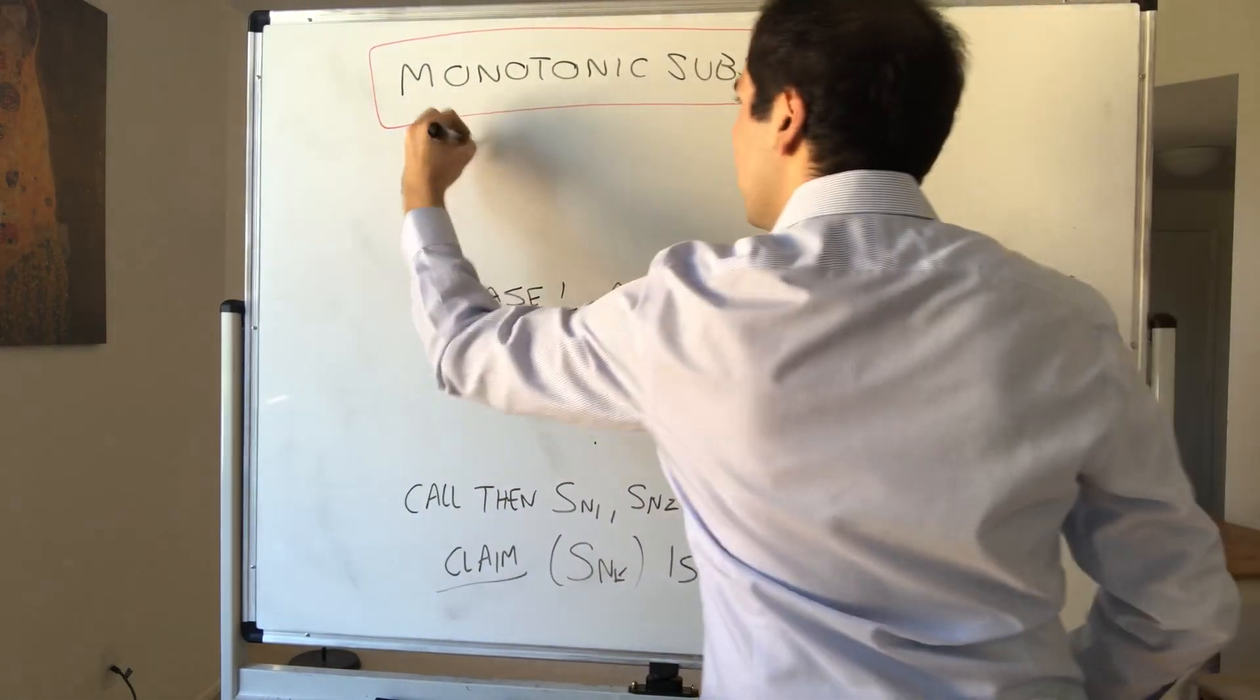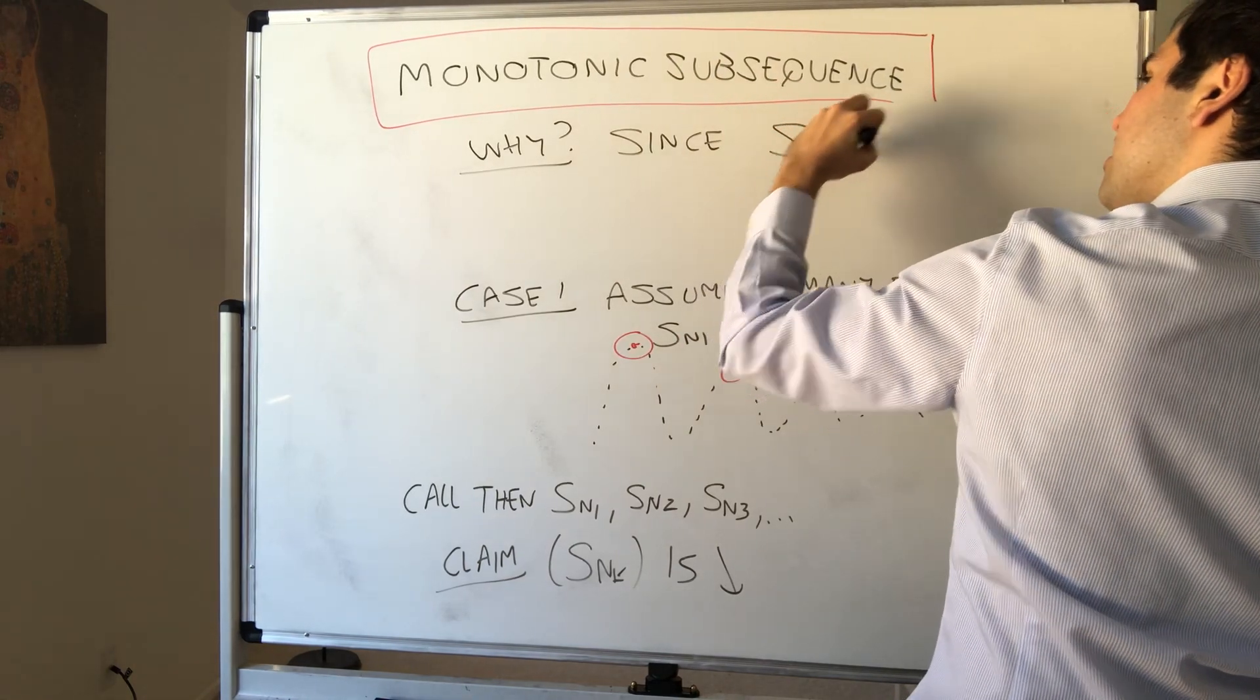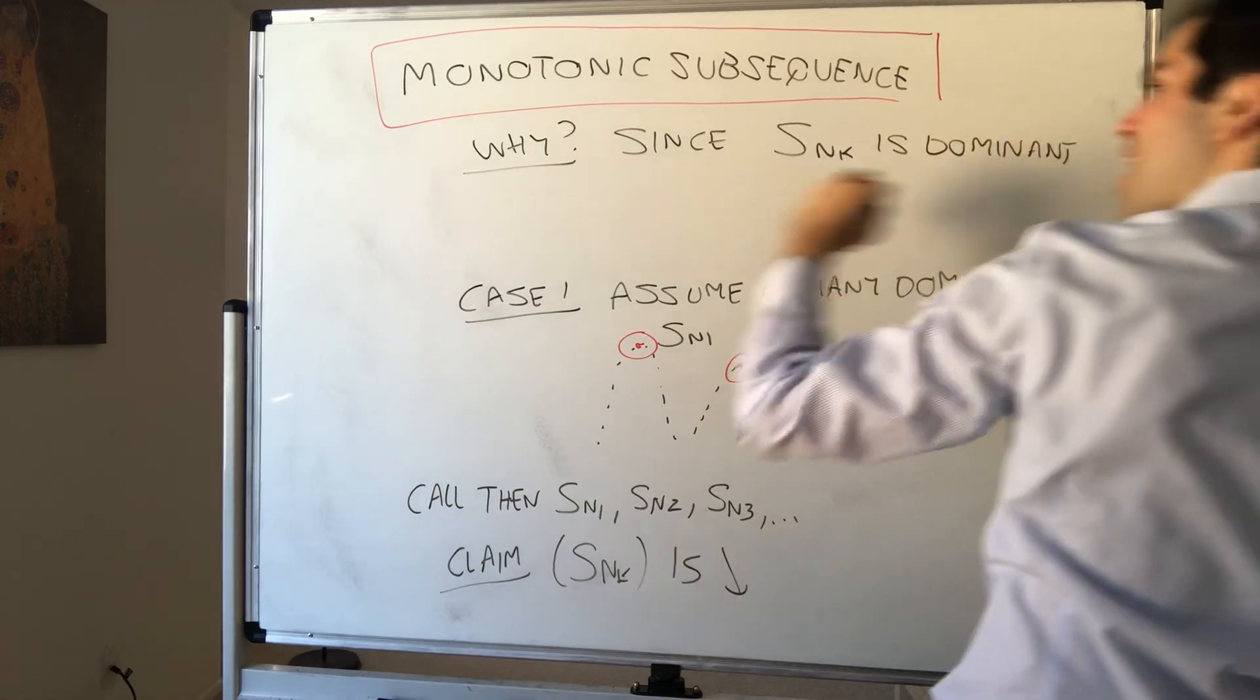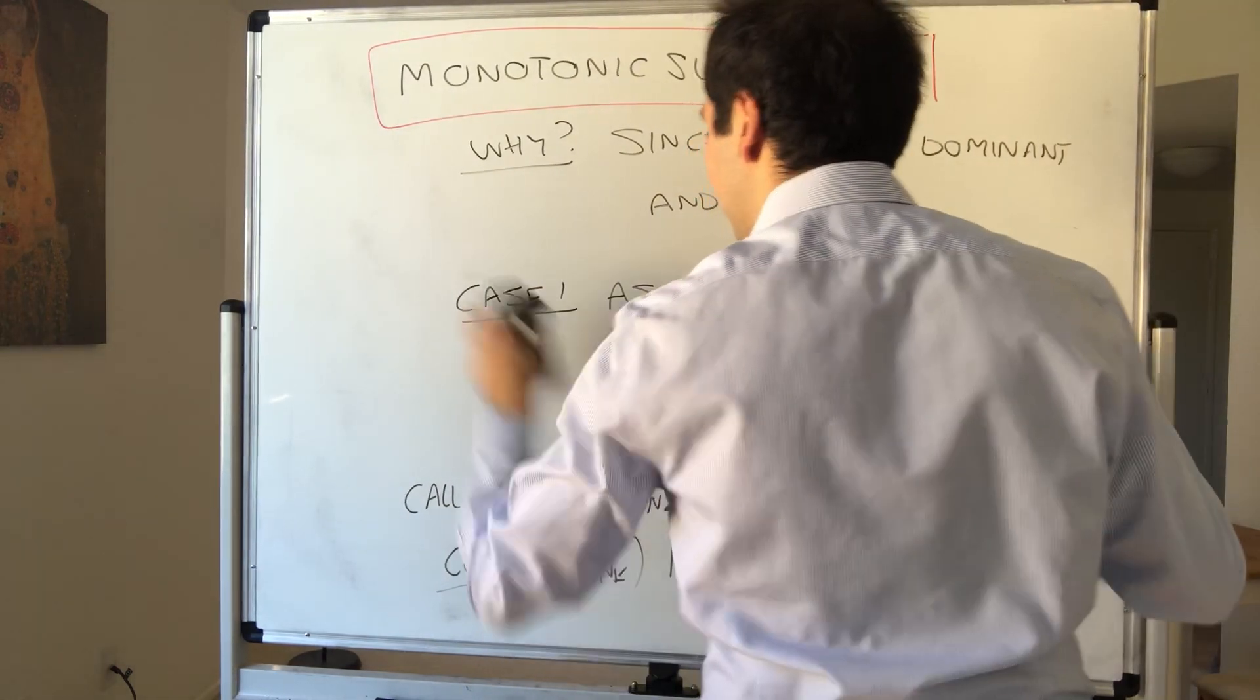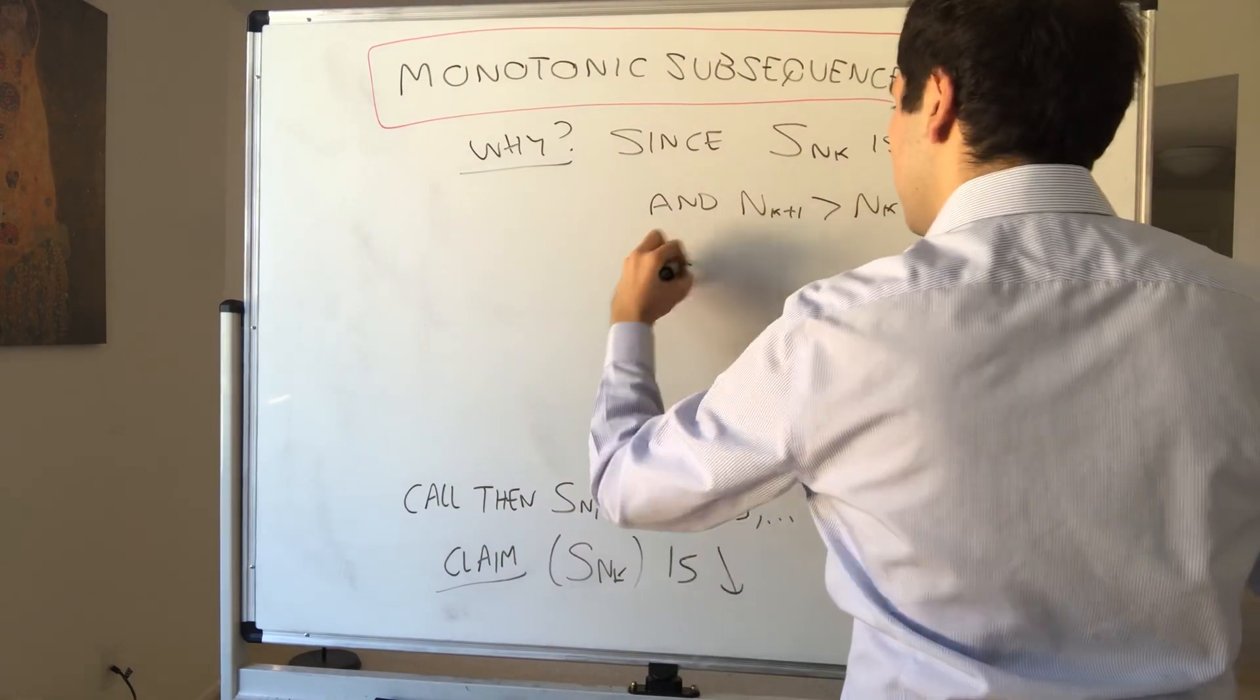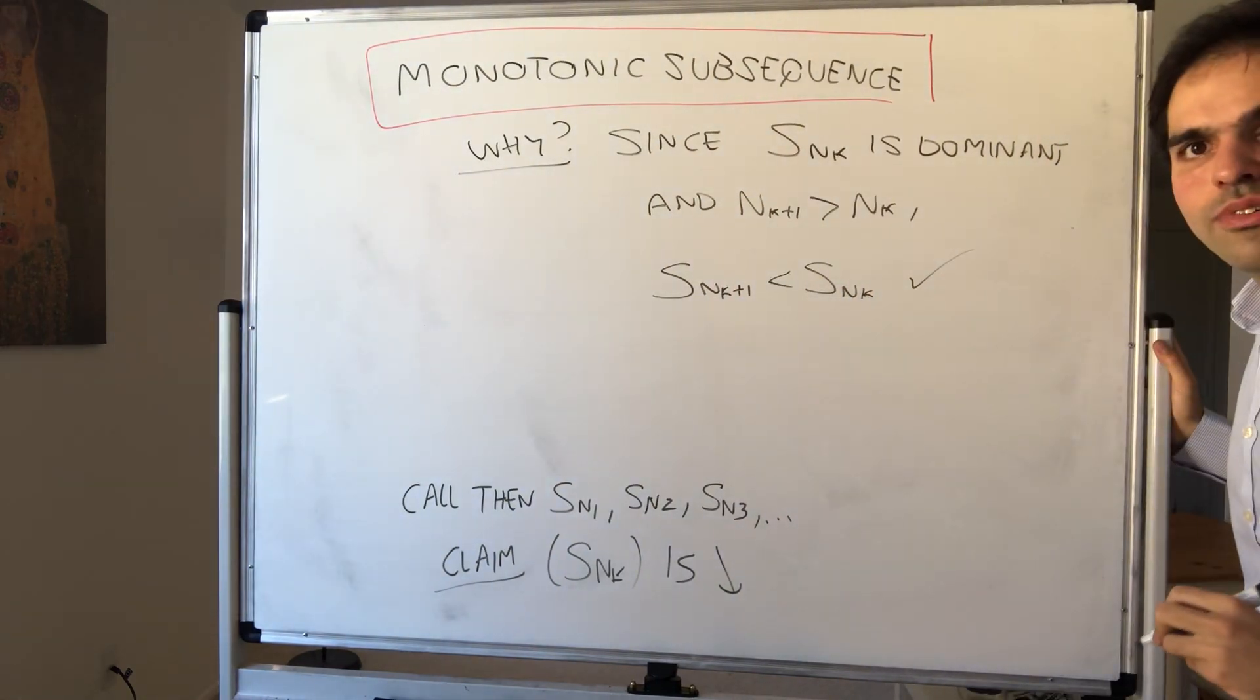So why? Since, for instance, SnK is dominant, and nK plus one is bigger than nK, what we get is that SnK plus one is less than SnK. And therefore, your sequence is decreasing.